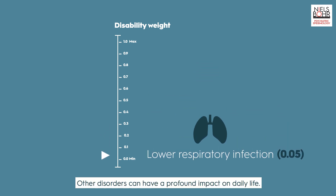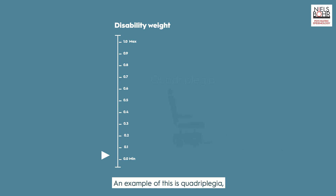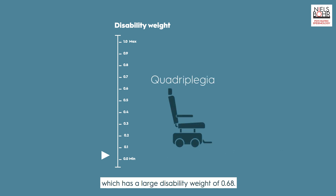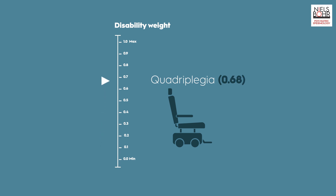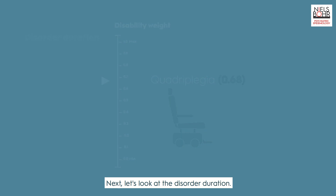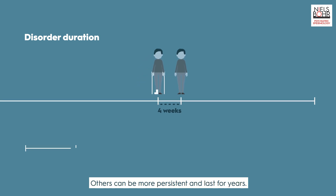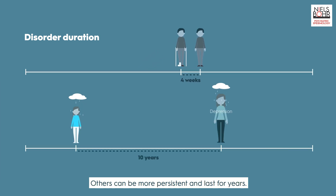Other disorders can have a profound impact on daily life — these have a severe disability. An example is quadriplegia, which has a large disability weight of 0.68. Next, let's look at the disorder duration. Some disorders only last a few weeks; others can be more persistent and last for years.